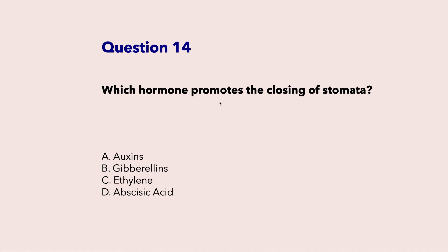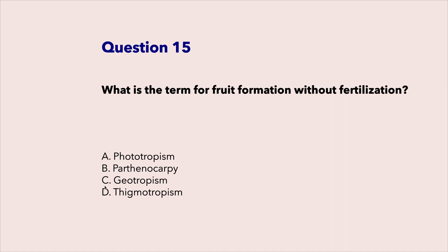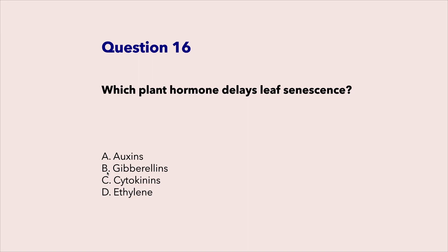Which hormone promotes the closing of stomata? Abscisic acid. What is the term for fruit formation without fertilization? Parthenocarpy. Which plant hormone delays leaf senescence? Cytokinins.